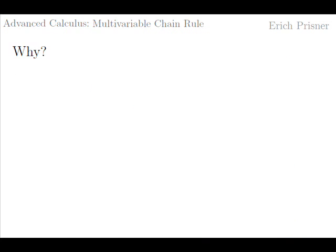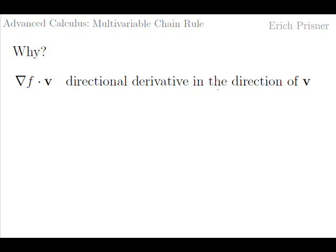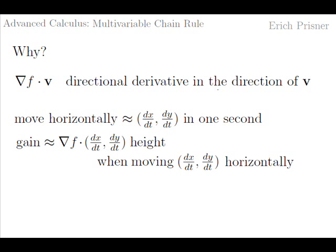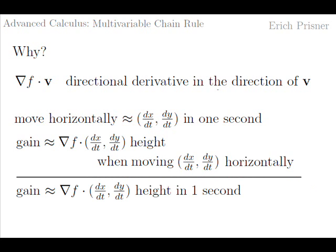But the formula is not just plausible — it is even true. Remember that the directional derivative of a multivariable function f in the direction of a vector v equals the scalar product of the gradient of f and v? The directional derivative is about the height gain if you move along the vector. In one second we move approximately (dx/dt, dy/dt) — the velocity vector along curve g. Moving in this direction on the surface of f, we then gain (gradient of f) · (velocity vector) in height. That is approximately the meaning of the second formula.